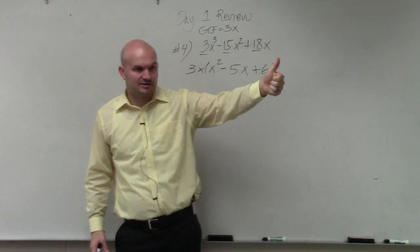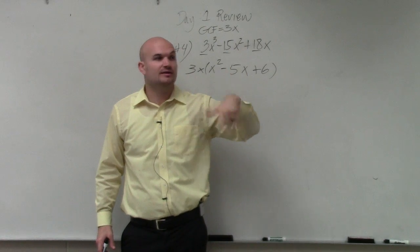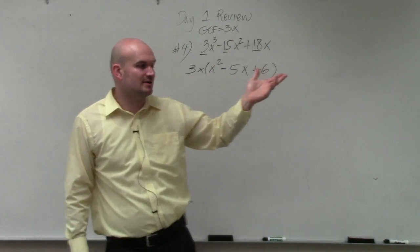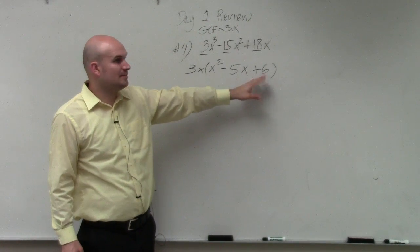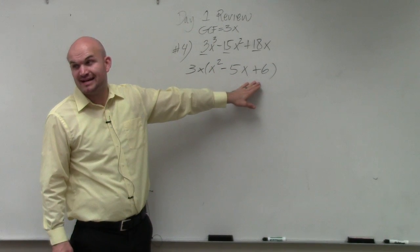Remember, we talked about factoring perfect square trinomials. We've done a lot with completing the square, difference of two squares, factoring trinomials, all these different ways. Basically, what we're looking for is what two numbers, since my a is equal to 1, multiply to give you 6 but add to give you negative 5.